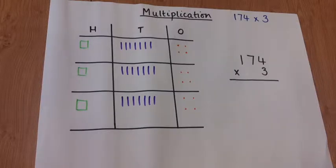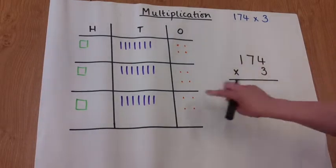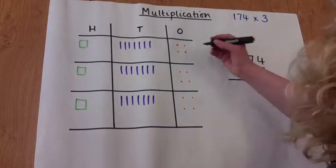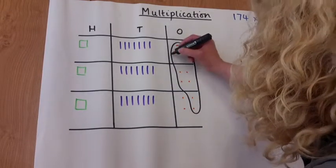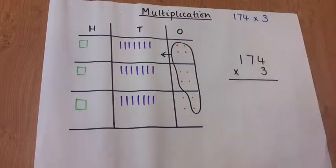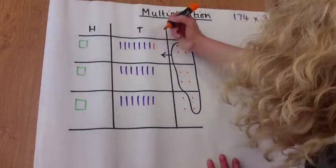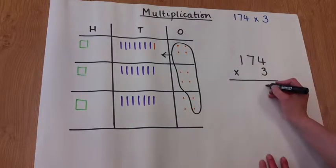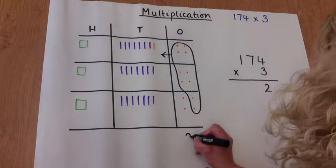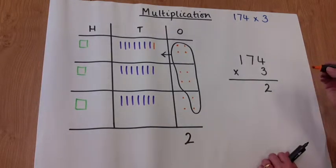So looking at the ones column, we've got four sets of 3, which is 12. So we're regrouping 10 ones into the tens column. When we look at the abstract, 4 times 3 is 12, so we put the tens above the tens column.